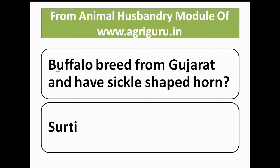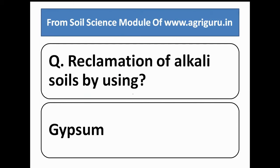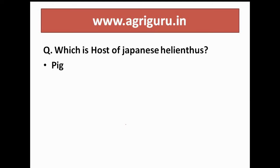Question number 26 is from the animal husbandry module of agriguru.in. The Dwefello breed from Gujarat that has sickle-shaped horns — the answer is Surti. Question number 28 from the soil science module: reclamation of alkalized soil is done by using what? The answer is gypsum.